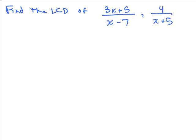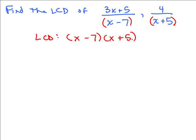Find the least common denominator of (3X plus 5) over (X minus 7) and 4 over (X plus 5). Looking at the denominators, each one has just one factor because you cannot factor them any further. Building it up, you take the first denominator (X minus 7), then look at the second one — there's no (X plus 5) yet, so you need that as well. It's fine to leave the LCD in factored form: (X minus 7)(X plus 5). If you multiply it out, you get X squared minus 2X minus 35, but I suggest leaving it in factored form.